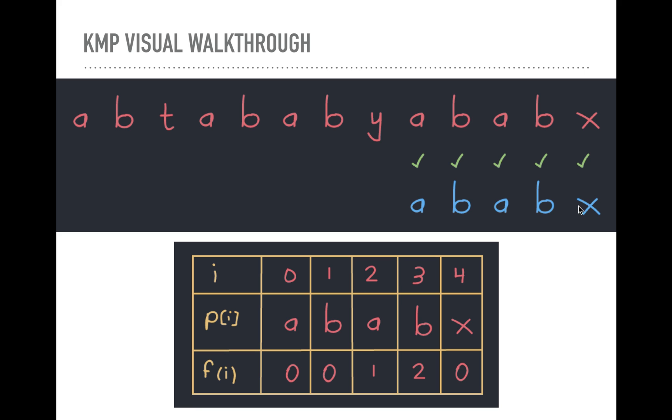That's at index m minus one. So that means that we've seen the whole, it's a match and that's the last character in our pattern. So bingo, we found a full match.